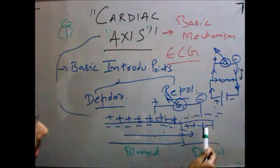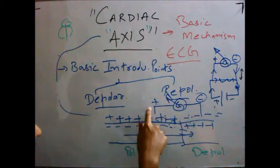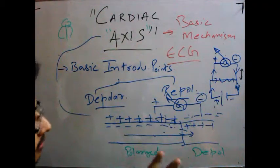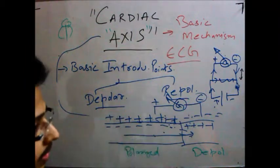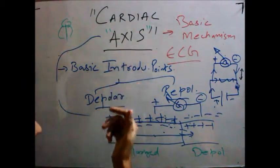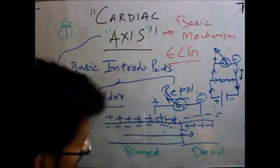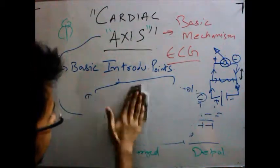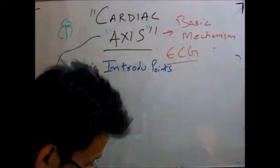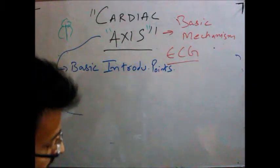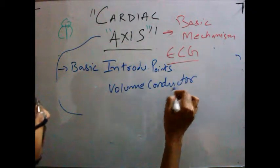Likewise, the potential would be recorded as an upward wave as the depolarization direction moves toward the electrode. The main concept here is just to prepare a foundational understanding of how the cardiac axis concept works. This is the basic introductory point to understand cardiac axis. The next important point is the volume conductor and dipole.